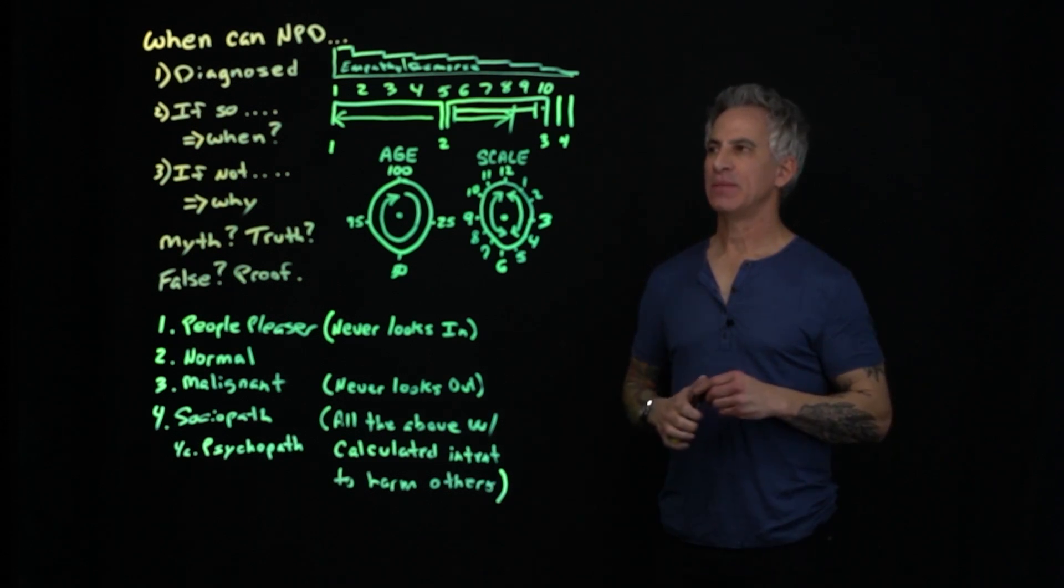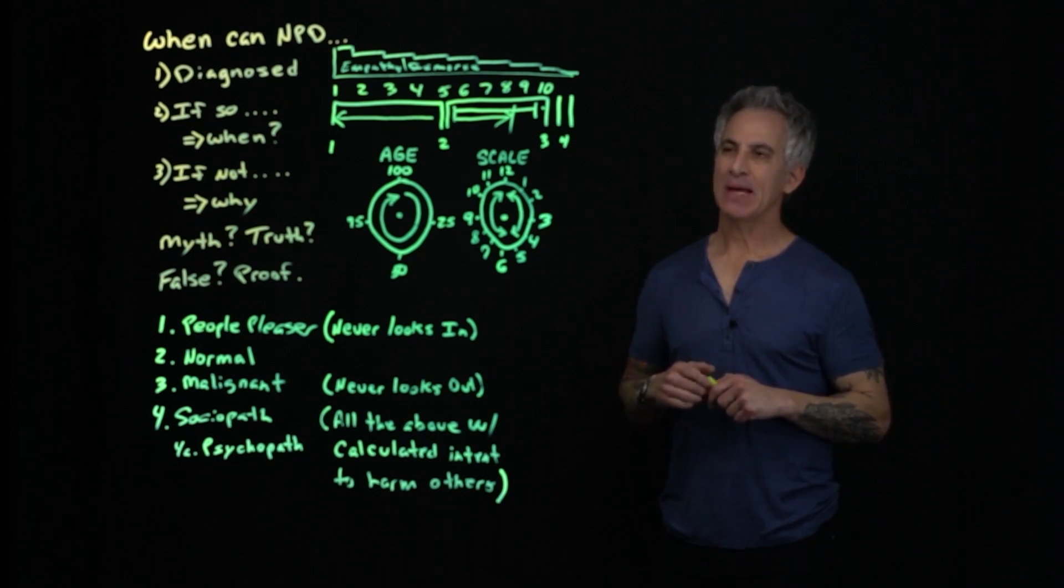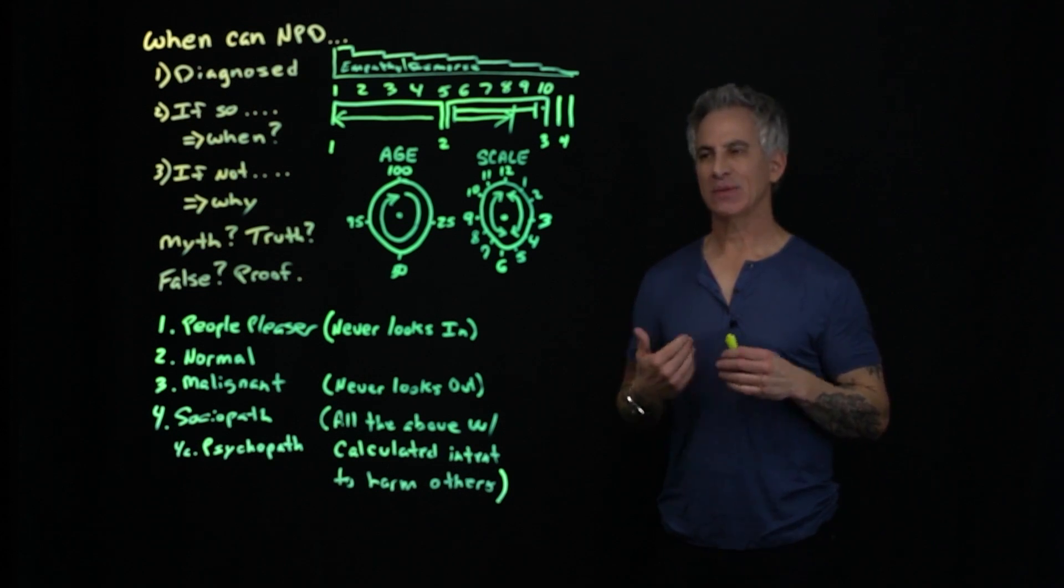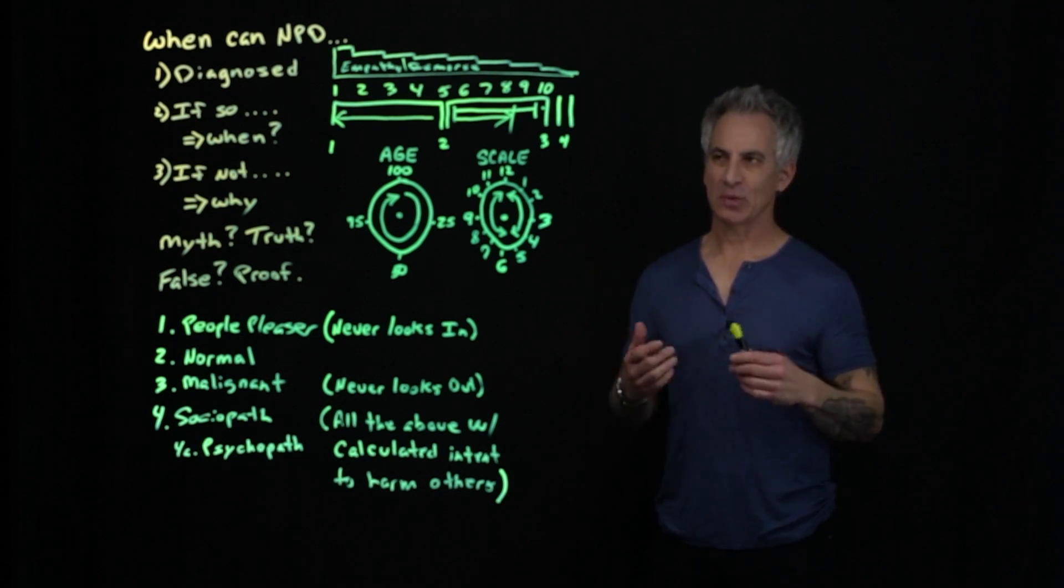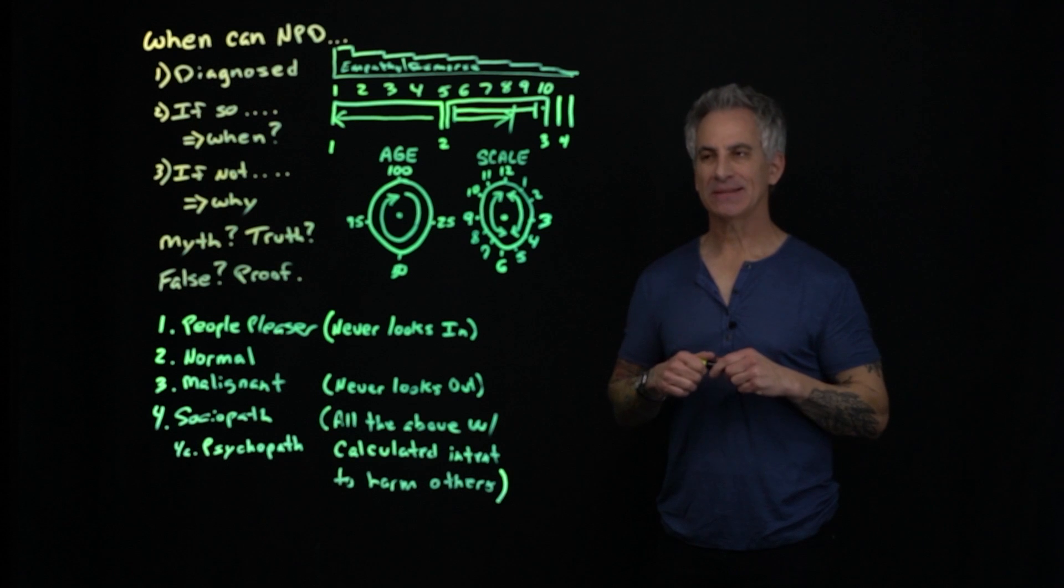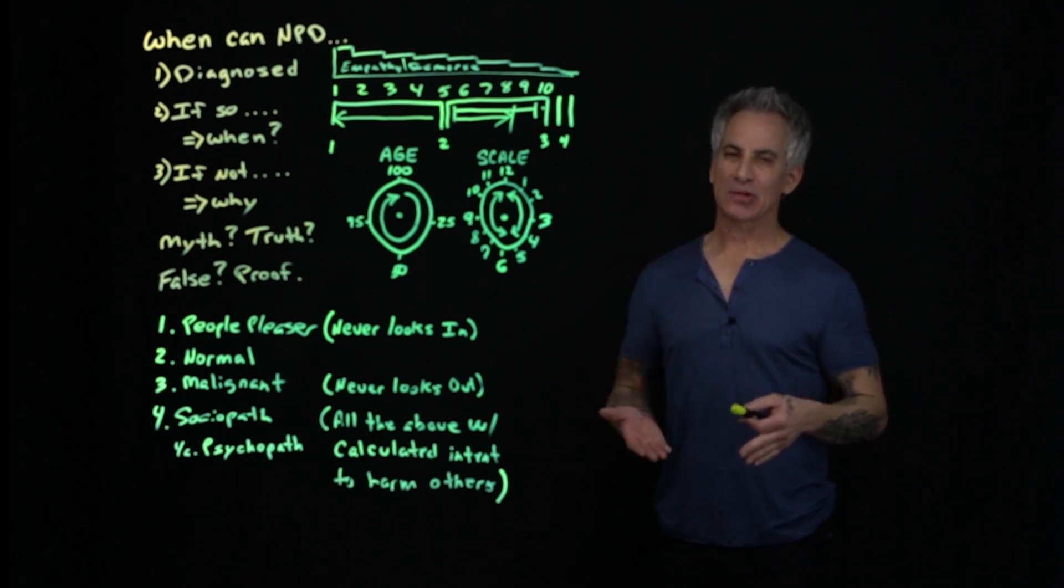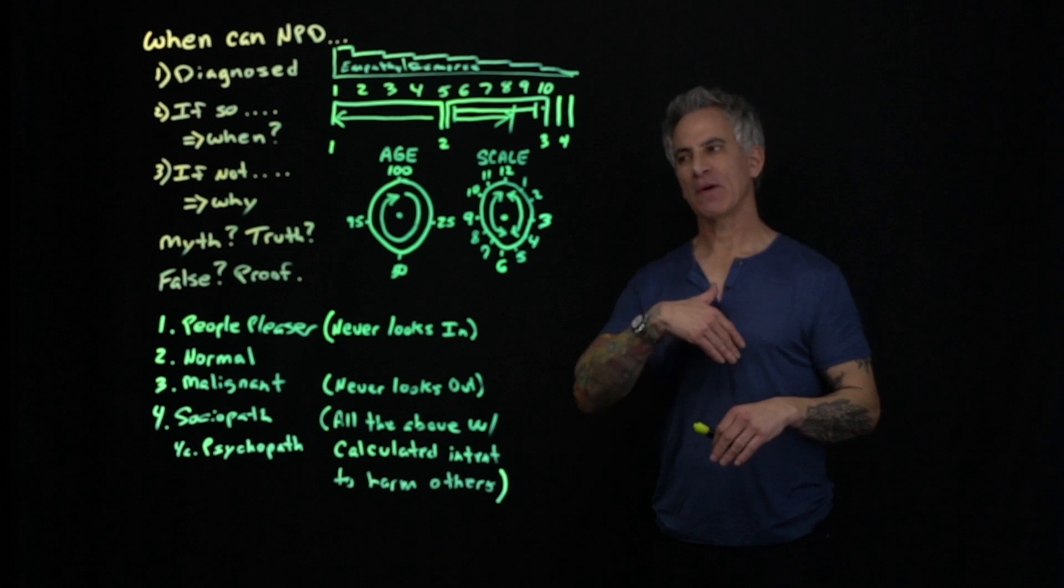My entire life and everyone in it has been there. I only know one malignant. And that is my stepfather. When can narcissistic personality disorder be diagnosed? If so, when? If not, why? Narcissistic personality disorder cannot be diagnosed unless you are dealing with a malignant narcissist or a sociopath or a psychopath. There are no scales as it relates to sociopath and psychopath in comparison to the scale of narcissism. It's a scale. So therefore, it can't be diagnosed until you get to malignant narcissist. So therefore, malignant narcissist should be its own category separate from narcissism.